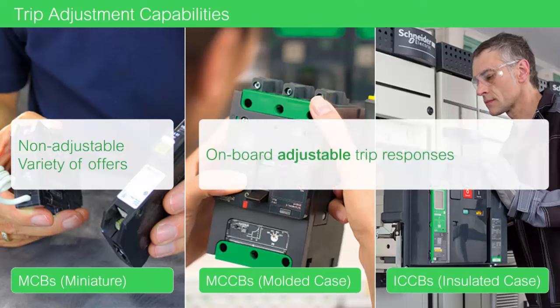Our molded case and insulated case circuit breakers do offer adjustable tripping by electronic means. In some molded case circuit breakers rated 250 amps and over, there is adjustment that can be made to the magnetic trip as well.